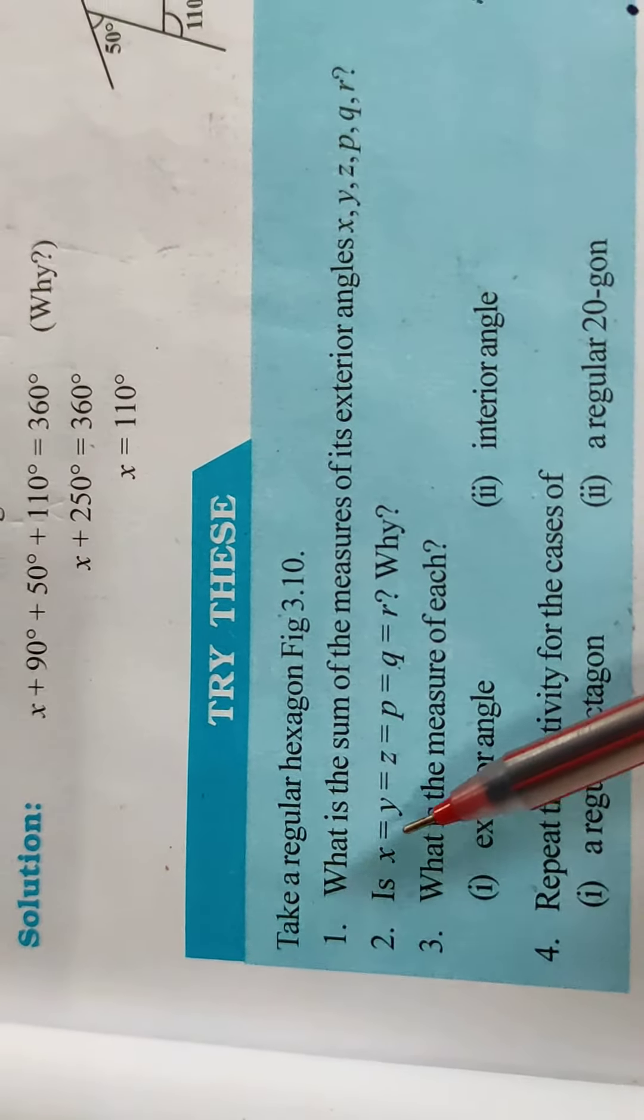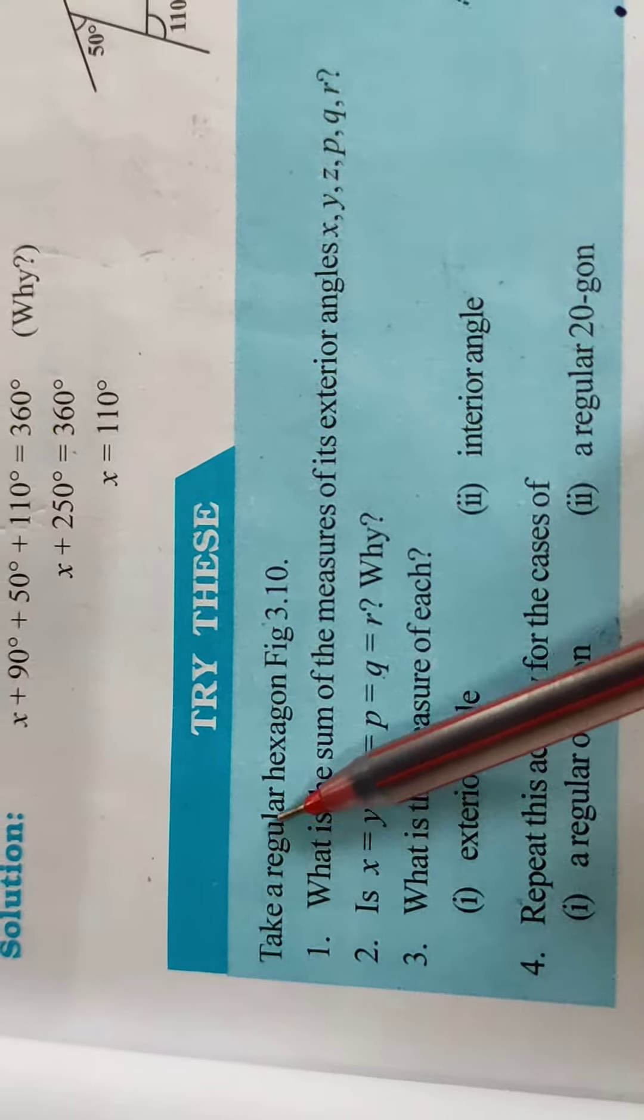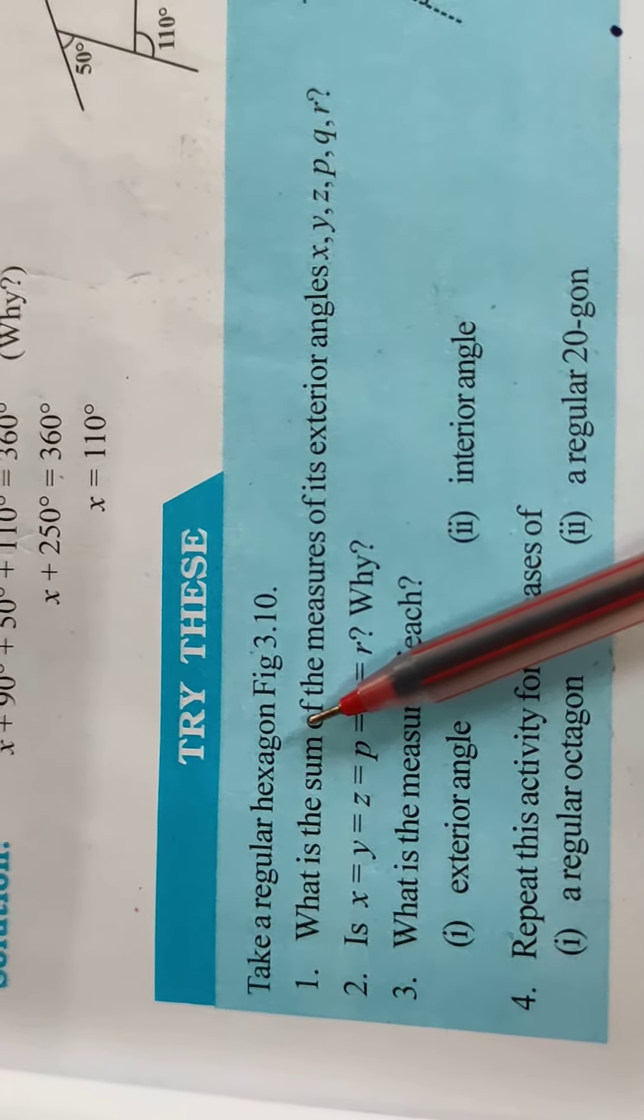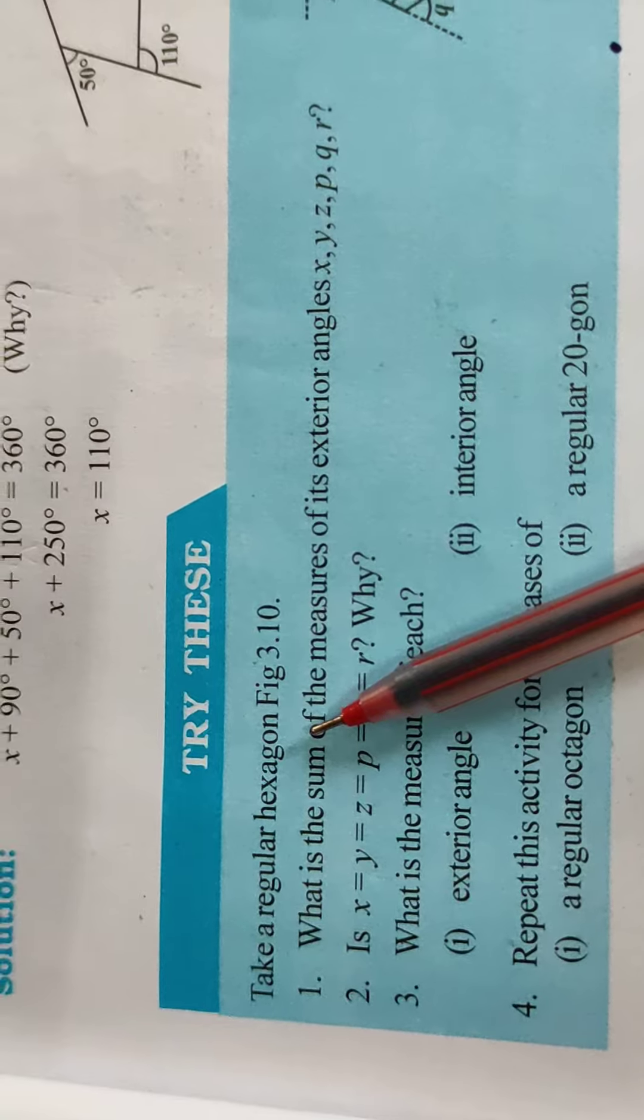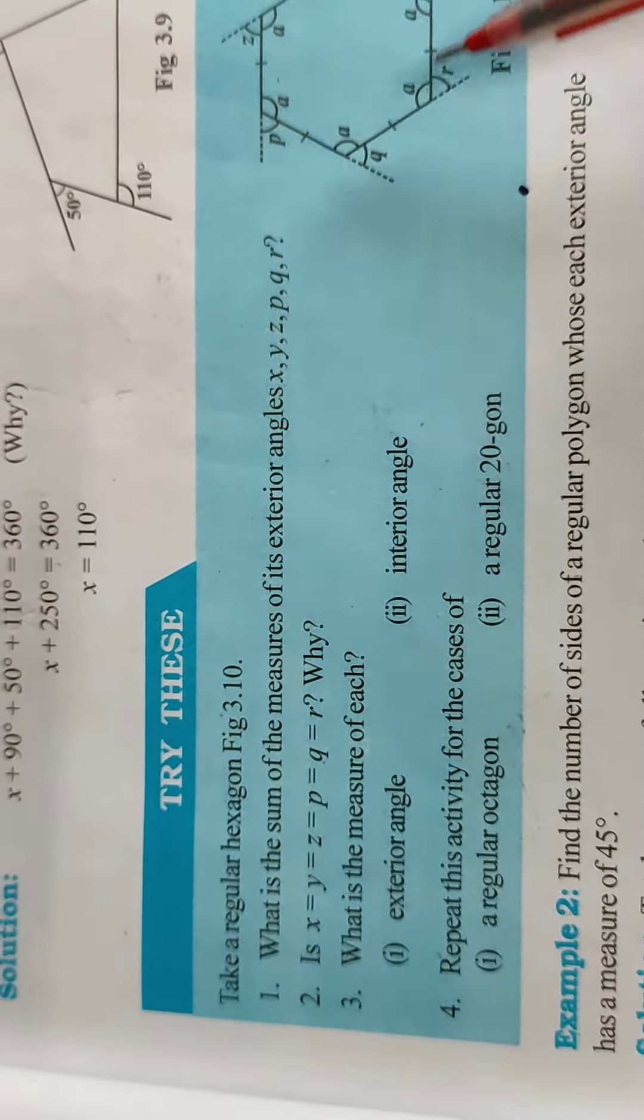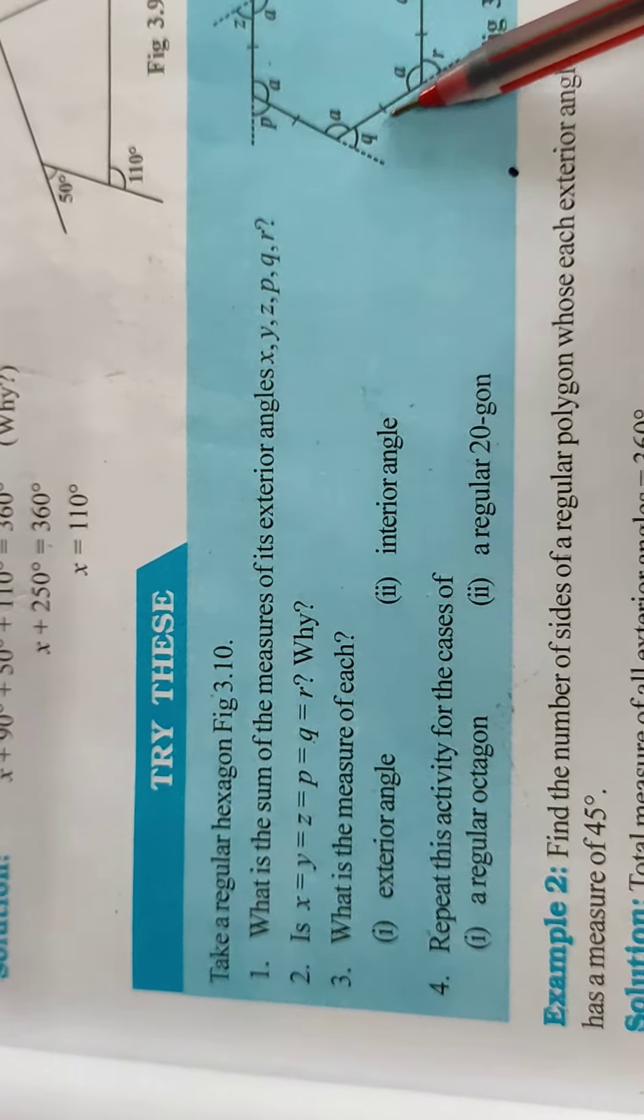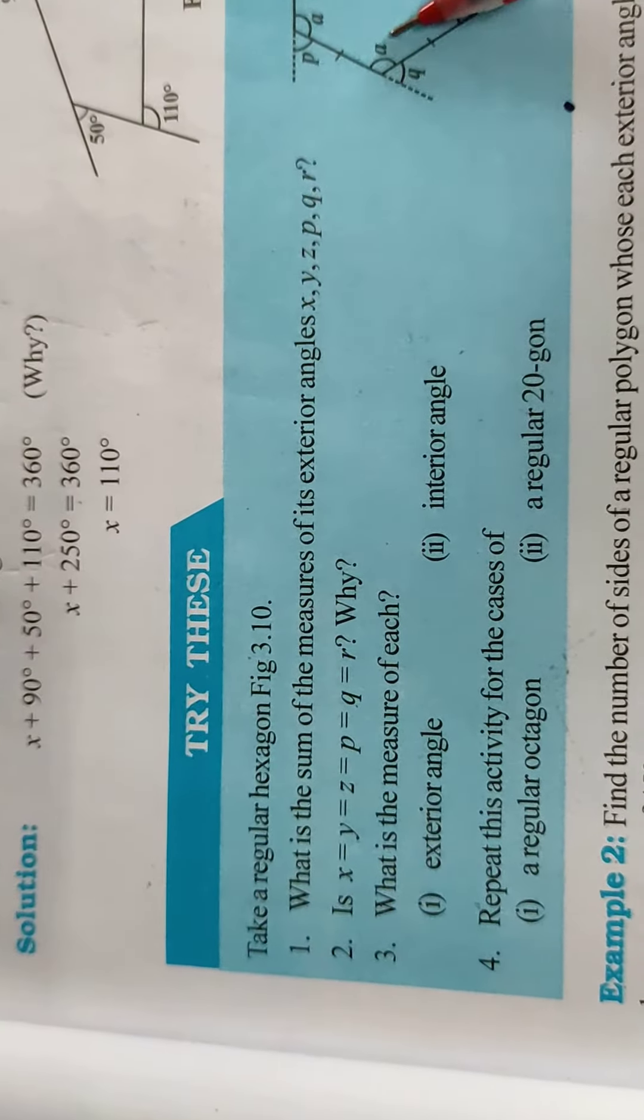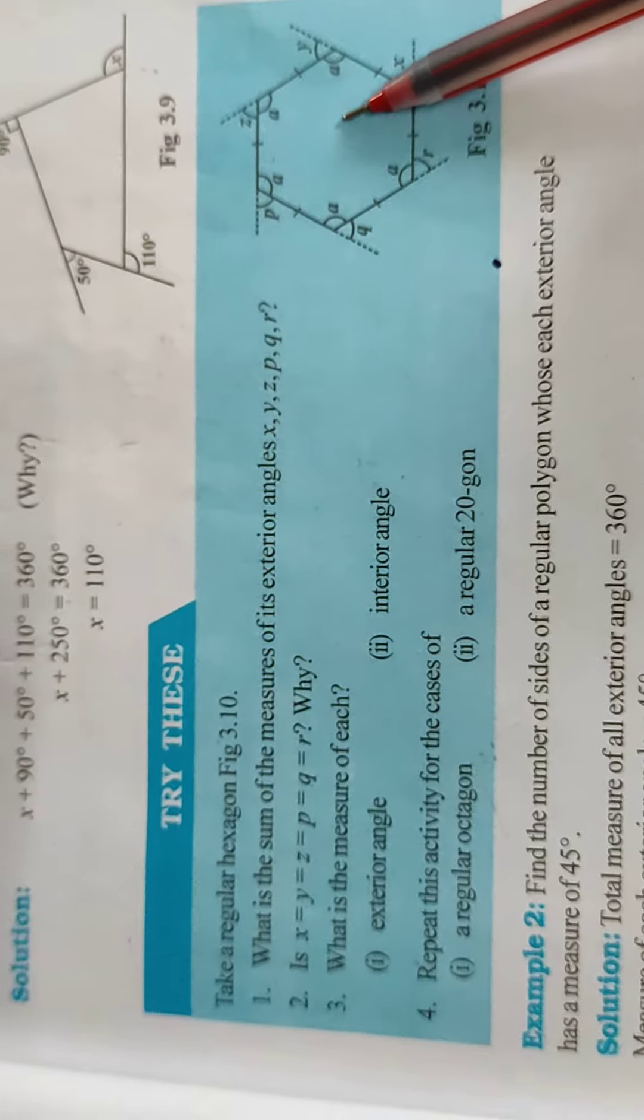So is x equal to y is x equal to y regular hexagon. So according to the definition of regular hexagon all the sides will be equal. So interior angles all the interior angles also will be equal.